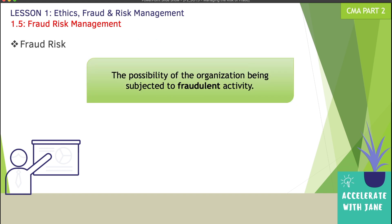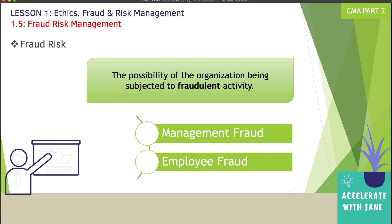What do we mean by fraud risk? If you haven't watched Section 4 of this lesson, I highly suggest you first watch it since this is simply a continuation of the previous lesson. When we say fraud risk, it is the possibility of the organization being subjected to fraudulent activity. We have two types of fraud: management fraud and employee fraud. Management fraud is also called fraudulent financial reporting, involving senior management. Employee fraud, also called misappropriation of assets, involves fraudulent activities perpetrated by non-senior employees.